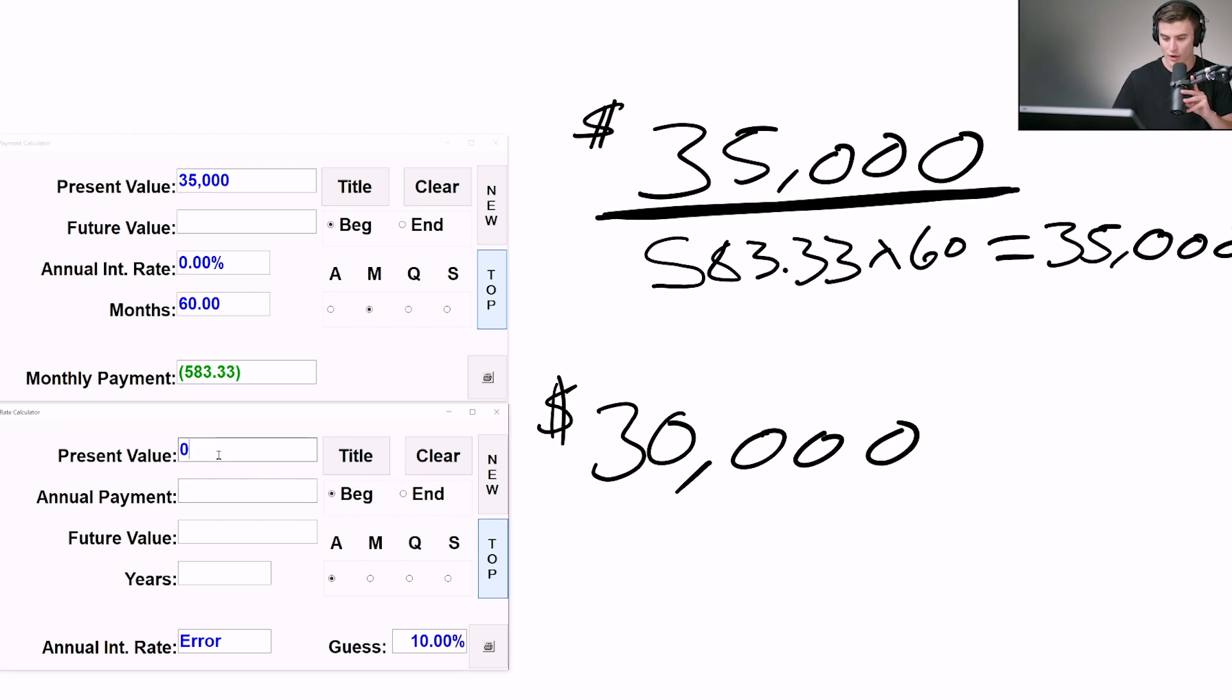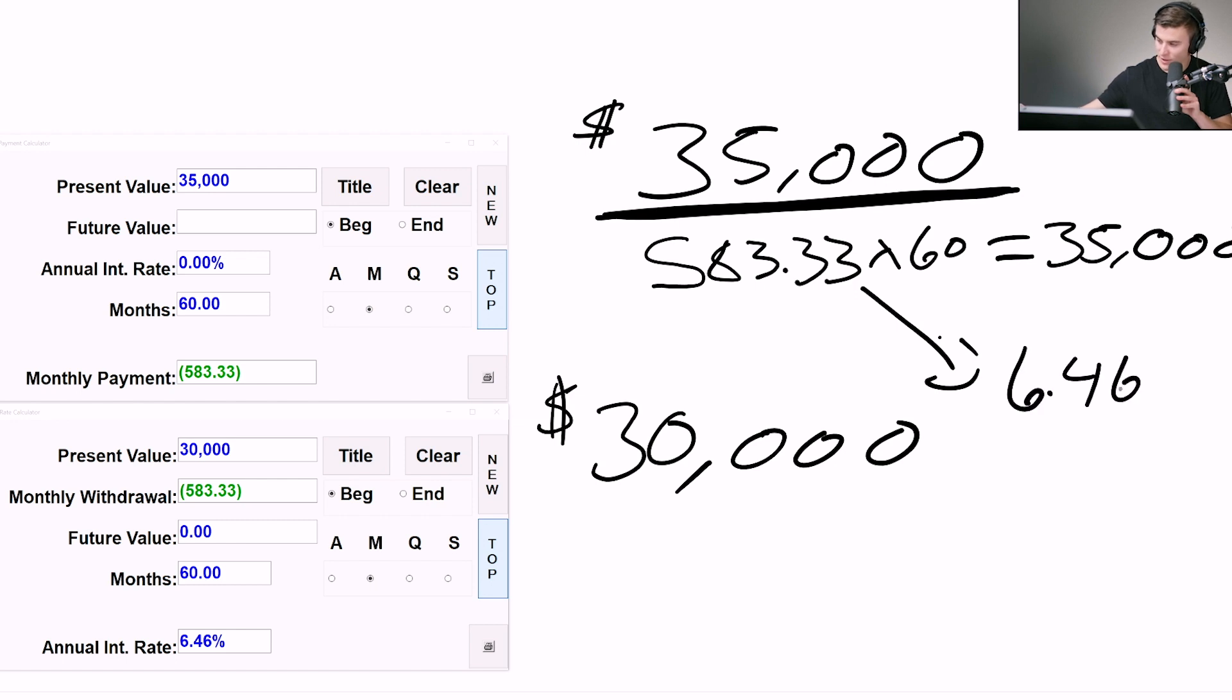What was the true cost of that 0% loan? We can actually figure that out. What I'm going to do is go over here to the present value calculator and put $30,000 in. This is the cost of the car, but we're going to compare that to the payment because we're comparing apples to apples. I'm going to take your 0% payment of $583.33. And the future value is zero over 60 months. Drum roll, please. That 0% loan actually cost you 6.46%.